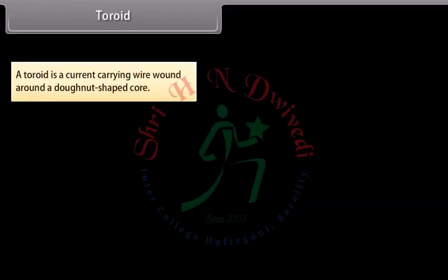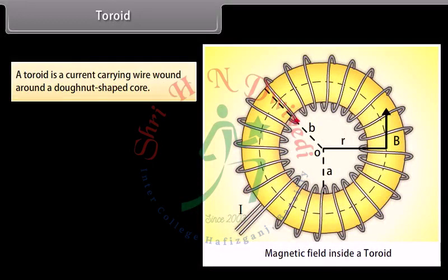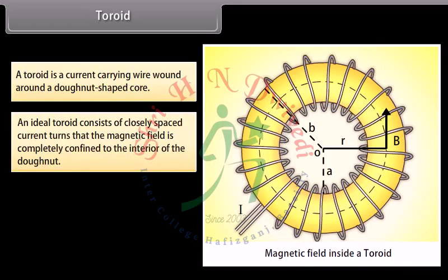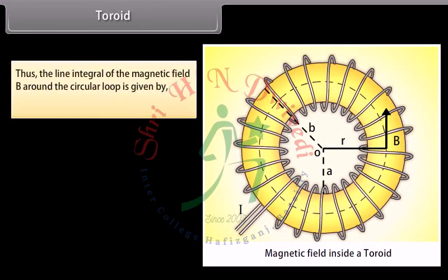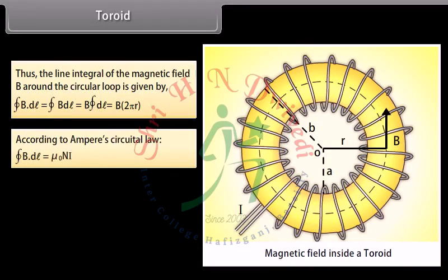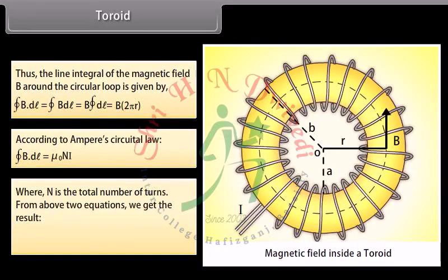Toroid: A toroid is a current carrying wire wound around a donut-shaped core. An ideal toroid consists of closely spaced current turns such that the magnetic field is completely confined to the interior of the donut. By symmetry, the magnitude of B is the same at all points on the circle of radius R and is directed tangentially. The line integral of B around the circular loop equals B times 2 pi R. Applying Ampere's Circuital Law, closed integral of B dot dL equals mu-0 N I, where N is the total number of turns. This gives B = mu-0 N I divided by 2 pi R.